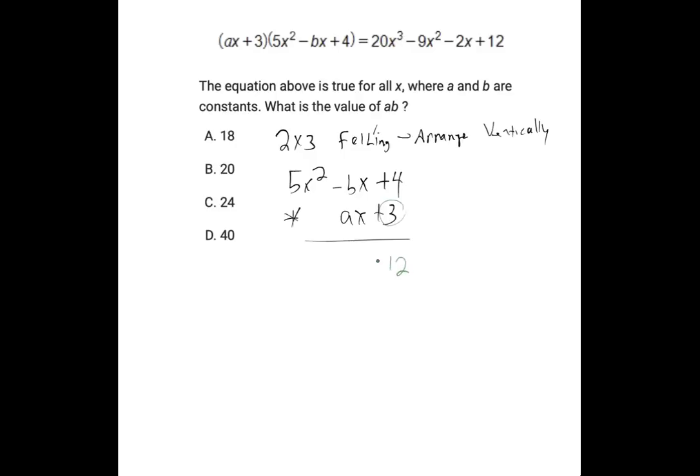So 4 times 3 is 12. 3 times negative bx is negative 3bx. And 3 times 5x squared is 15x squared.